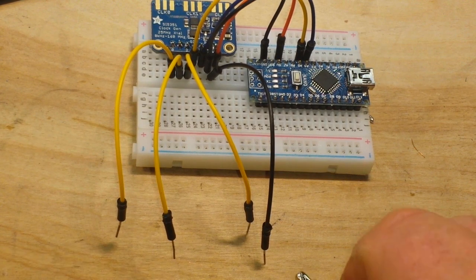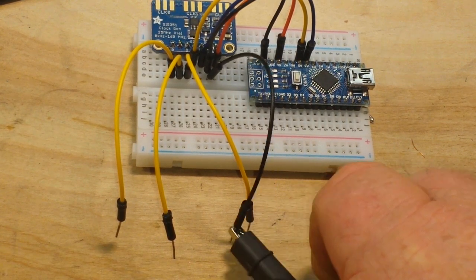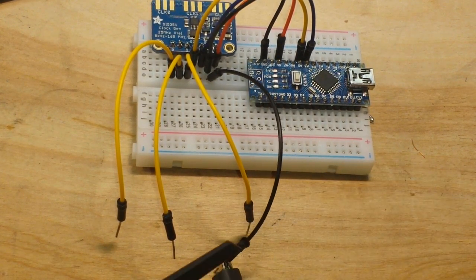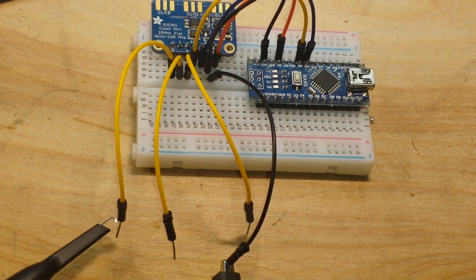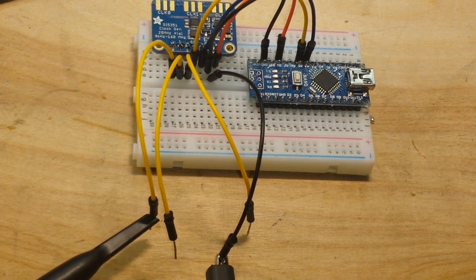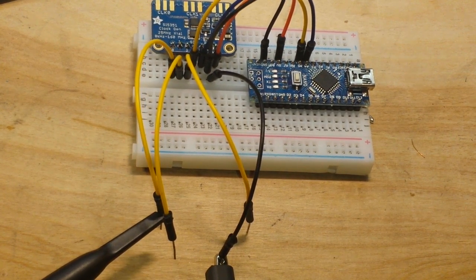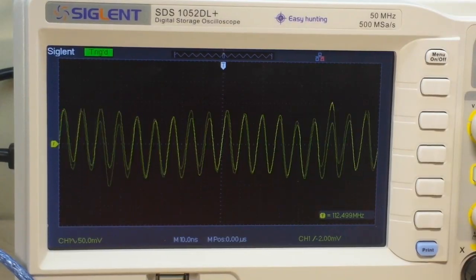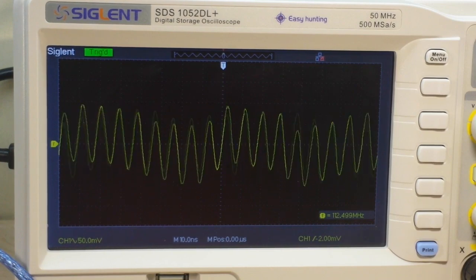And then we'll connect this probe to output 0 and we'll take a look at it on the scope. Okay here it is on the oscilloscope.